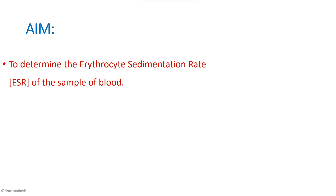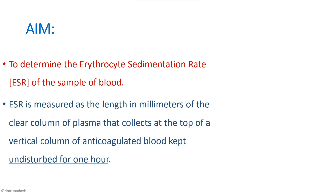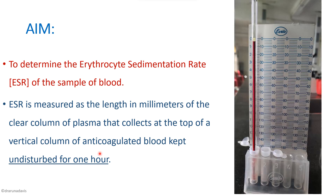What is meant by ESR? It is measured as the length in millimeters of the clear column of plasma that collects at the top of a vertical column of anticoagulated blood kept undisturbed for one hour. The length of this clear column of plasma is the erythrocyte sedimentation rate or ESR.